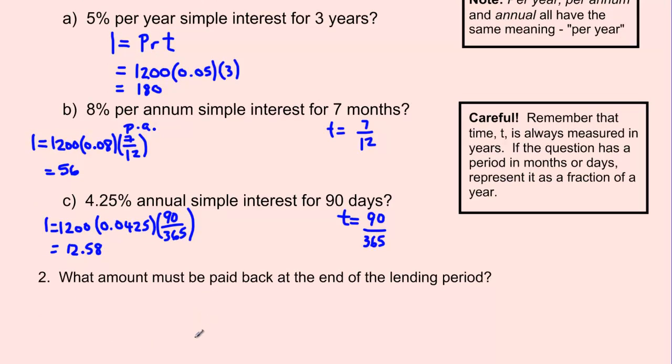Part 2 asks what amount must be paid back at the end of the lending period. We've calculated all of the different amounts of interest, but now how much has to be paid back? The amount paid back is always equal to whatever your principal was, or the initial amount, plus the amount of interest that was earned. For part A, it was $1,200 plus $180 equals $1,380. For part B, it'll be $1,200 plus $56, so $1,256. And for part C, it'll be $1,200 plus $12.58, which equals $1,212.58.